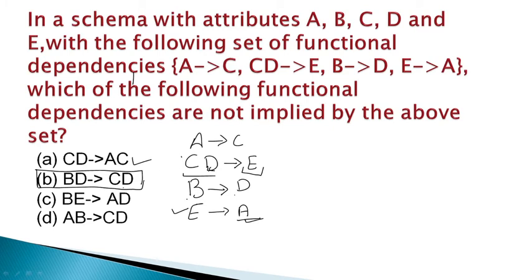Let us also verify the remaining options. For be → ad: b → d gives d, and e → a gives a, so be → ad is implied. For ab → cd: a → c gives c, and b → d gives d, so ab → cd is also implied. But bd → cd is NOT implied. So the correct answer is option B.